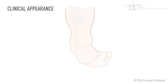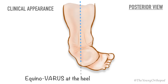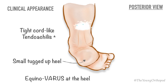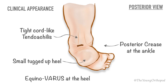The posterior examination reveals an equinovarus posture of the heel, a small tucked-up heel, tight cord-like tendo Achilles, a posterior crease at the ankle joint, and calf atrophy are noticeable.